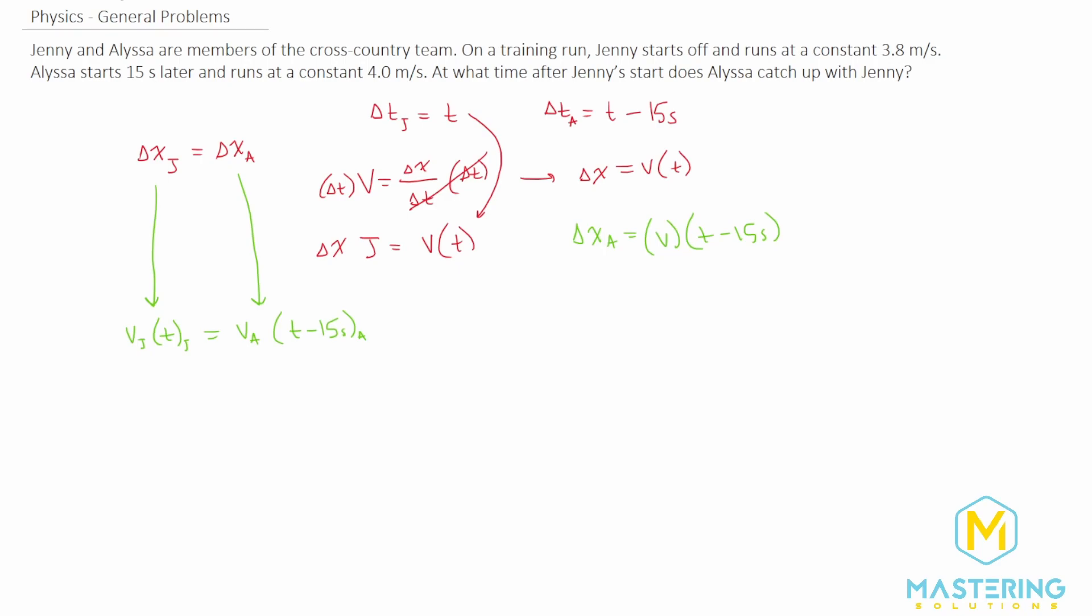So let's isolate t. First, let's factor the v into the parentheses. So velocity times t for Jenny equals the velocity for Alyssa times time minus the velocity for Alyssa times 15 seconds. Now we can add this over to the other side.